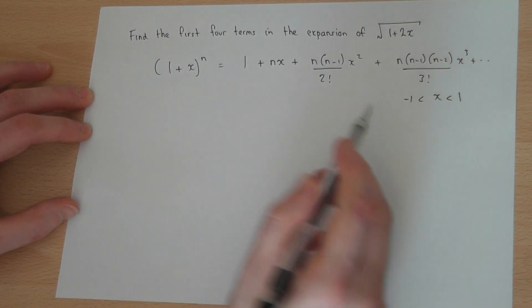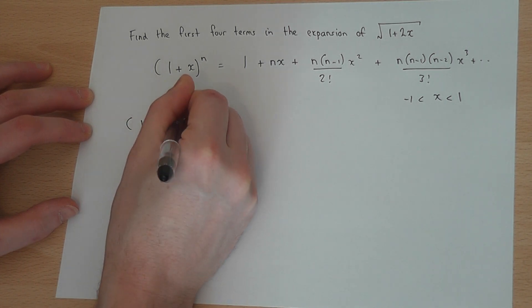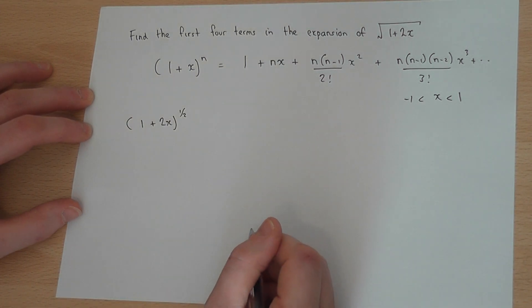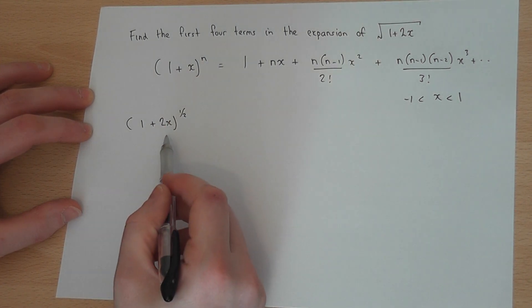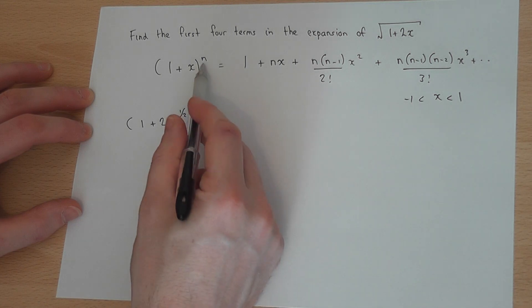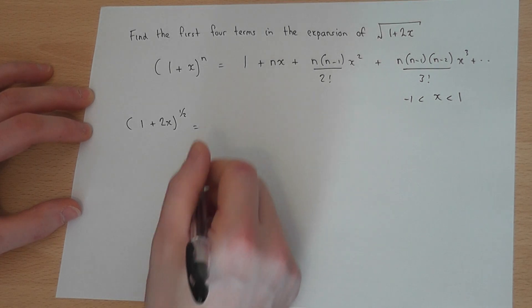So in our example, we have 1 plus 2x to the power of a half. So rather than x, I've got a 2x, and rather than n, I've got a half. So if I try to expand this using the same way, I get the following.